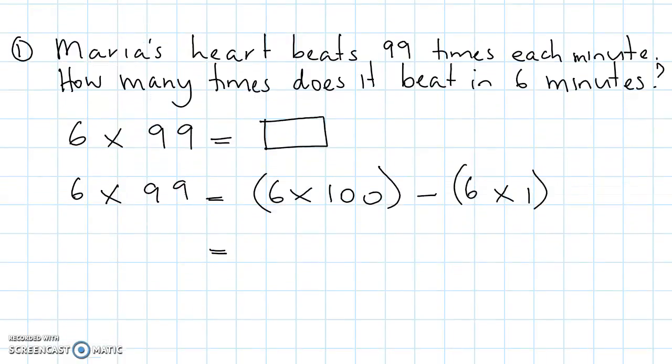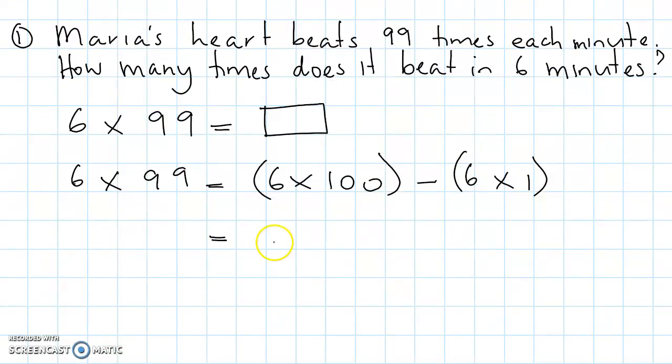Equals 6 times 100 is 600. Take away 6 times 1 is 6. Equals 600 take away 6 is 594.